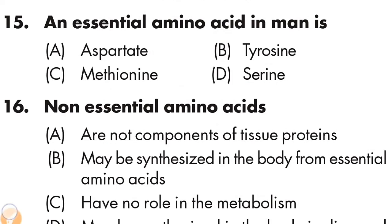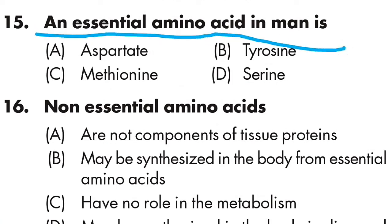Question number fifteen: an essential amino acid in man is — Option A is aspartate, Option B is tyrosine, Option C is methionine, Option D is cysteine. Option C is correct — methionine is an essential amino acid in man.